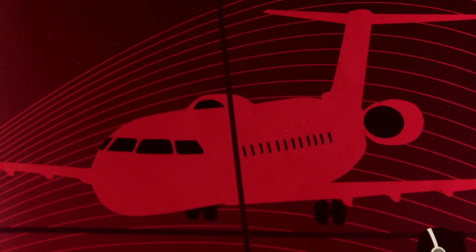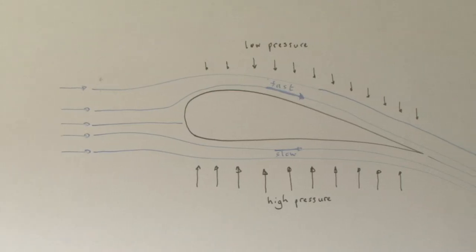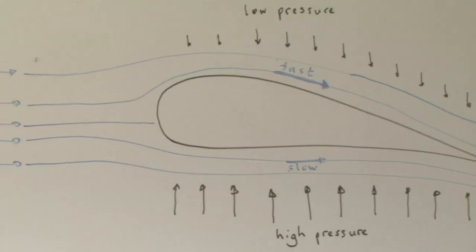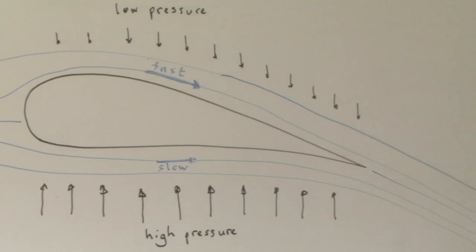For flying contraptions like gliders and aeroplanes, it's all about the wings. If you look carefully at an aeroplane wing or an airfoil, you will see that the top is more curved than the bottom.